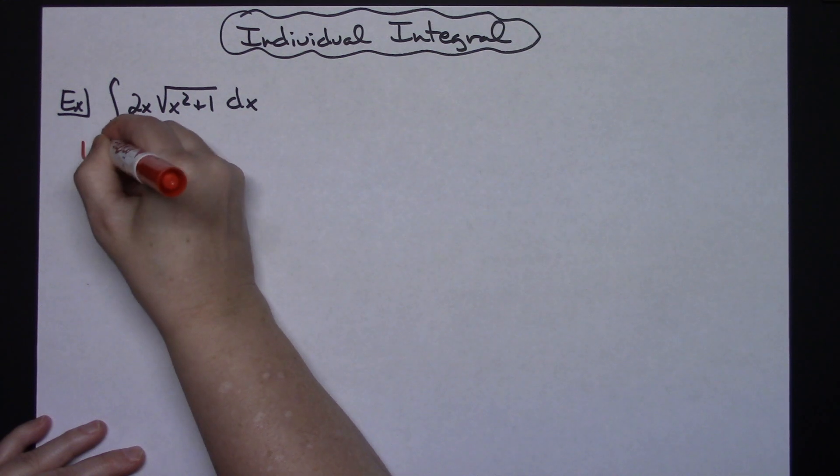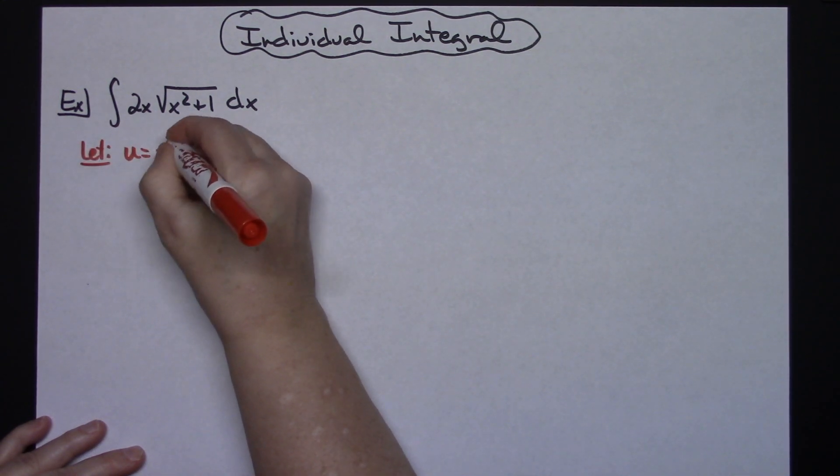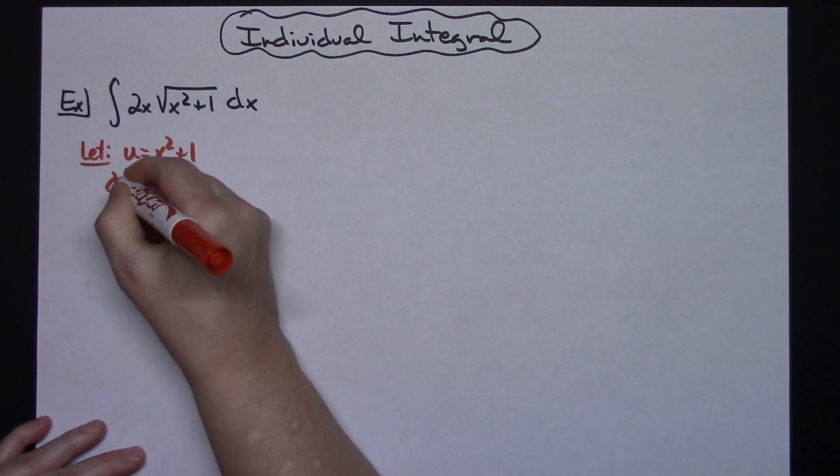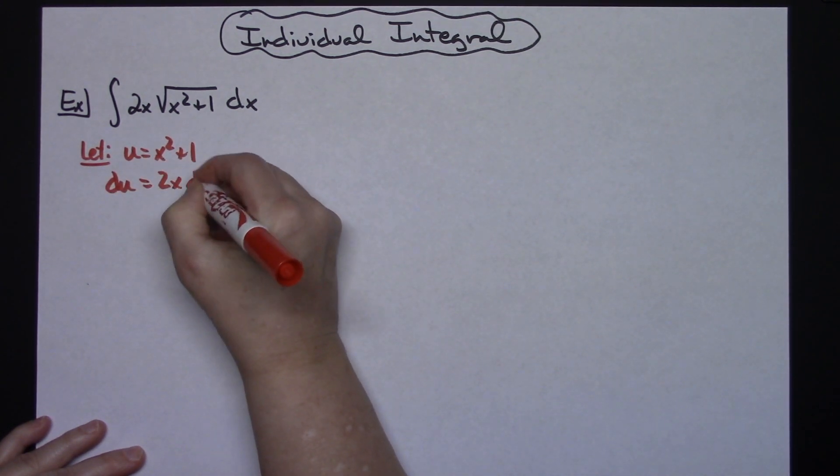So I'm going to let u equal the x squared plus 1. I'm going to take the derivative of both sides. I'll have du is equal to 2x dx.